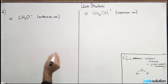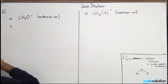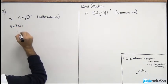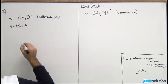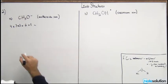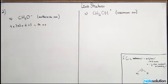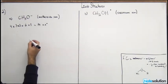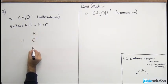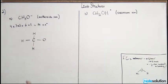Let's do our first example: methoxide ion. We start by calculating the total valence electrons. Carbon has four, there are three hydrogens each with one valence electron giving three, oxygen has six, and the negative charge means we add one extra electron. Carbon is the central atom with the H's on the sides connected by bonds.